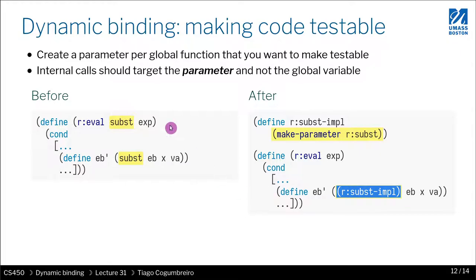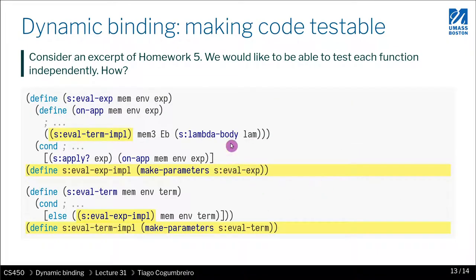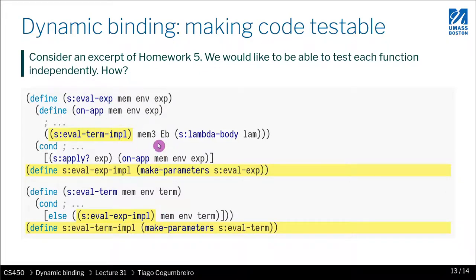And then you would have the best of both worlds. Reval does not have that explicit parameter for subst, but you can still replace the substitution function upon calling reval. Similarly, if I wanted to change homework 5 so that we can test seval-exp and seval-term independently from one another, we would have to create two parameters — one for eval-exp and another for eval-term — and then we would be able to independently test each one.